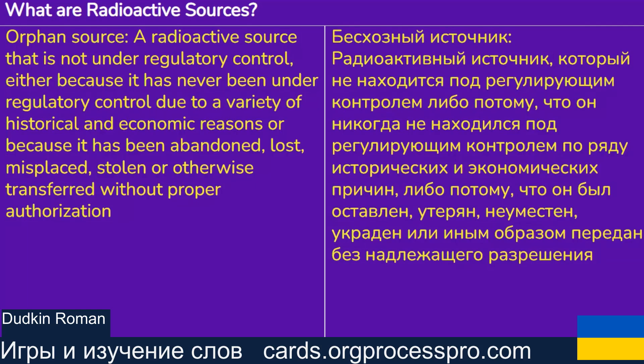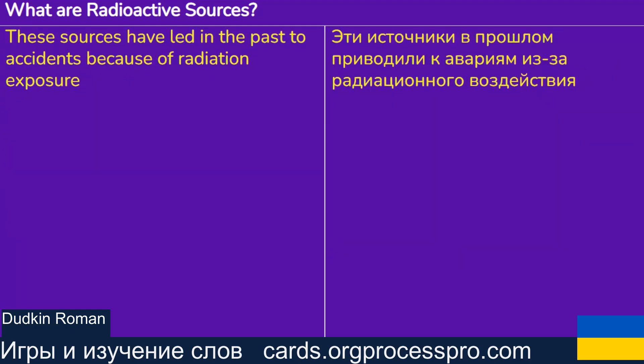An orphan source is a radioactive source that is not under regulatory control — either because it has never been under regulatory control due to a variety of historical and economic reasons, or because it has been abandoned, lost, misplaced, stolen or otherwise transferred without proper authorization. These sources have led in the past to accidents because of radiation exposure.